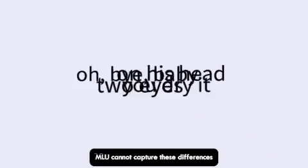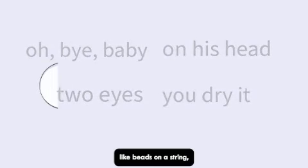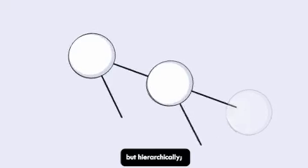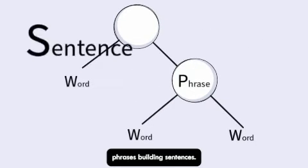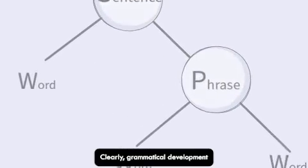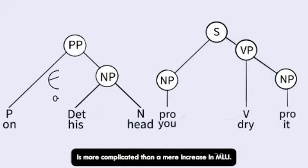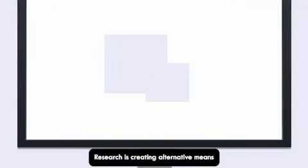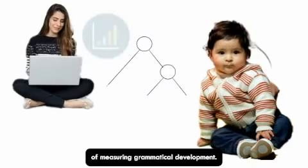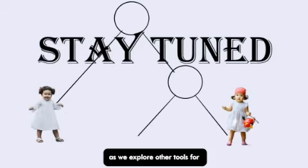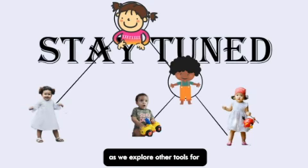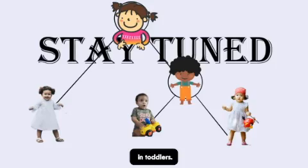MLU cannot capture these differences because language is not organized linearly like beads on a string, but hierarchically — words building phrases, phrases building sentences. Clearly, grammatical development is more complicated than a mere increase in MLU. Research is creating alternative means of measuring grammatical development. Join us in future videos as we explore other tools for assessing grammatical development in toddlers.